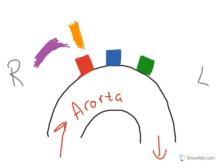This concludes my video on the blood vessels of the aortic arch — the arteries we find on the largest artery of the body, the aorta, as it continues to become the descending aorta.